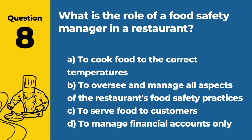Question 8. What is the role of a food safety manager in a restaurant? Answer: B. To oversee and manage all aspects of the restaurant's food safety practices. The food safety manager ensures compliance with food safety regulations and trains staff on proper food handling techniques.